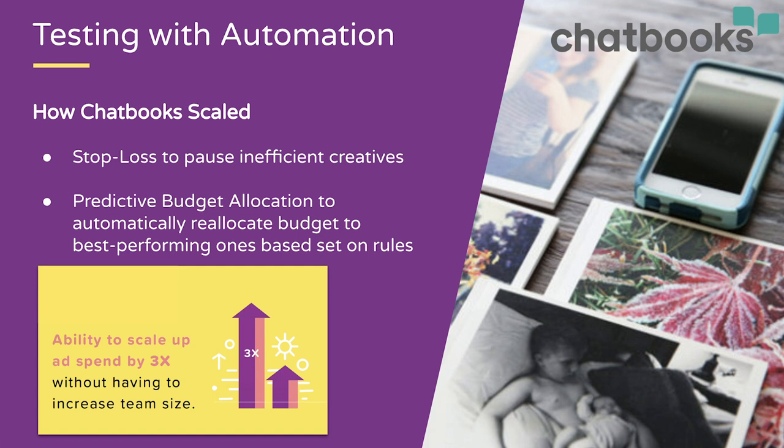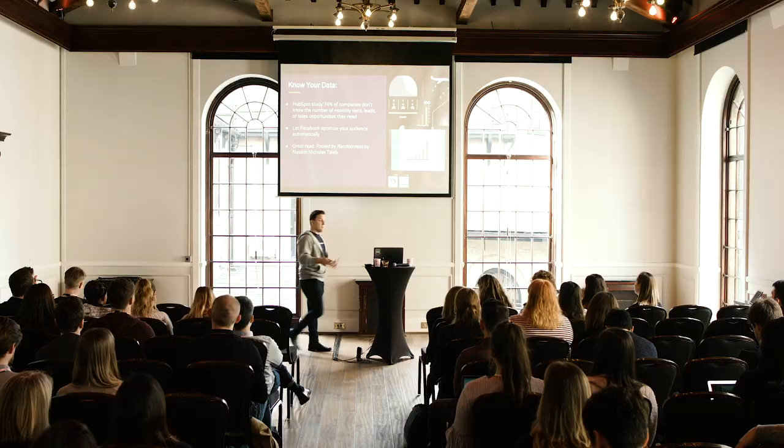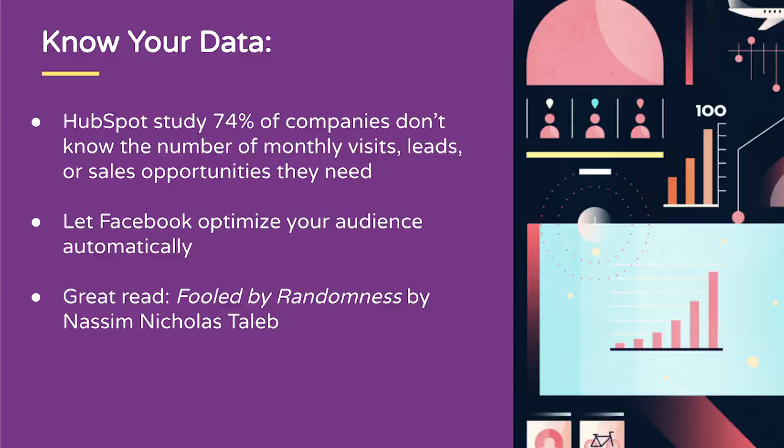When it comes to knowing your data, a lot of teams are busy advertising across Facebook, Instagram, Google, Amazon, and all these different platforms, so it's easy to lose track and not understand your data in a granular way. There's a book called 'Fooled by Randomness' — it addresses how people go based on intuition instead of numbers. It's a quick read that encourages you to really dig into your numbers and understand at a deeper level what's doing well and what isn't.